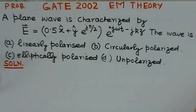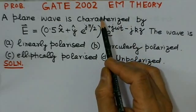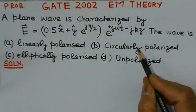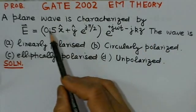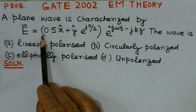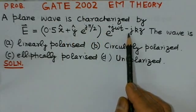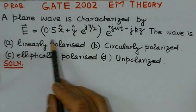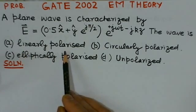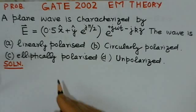This video considers another simple problem on Electromagnetic Theory. This problem is based on the polarization of a wave. The problem states: a plane wave is characterized by E equals 0.5x̂ plus ŷ times e to the power j(π/2) times e to the power j(ωt − kz). This is the electric field given, and we have to find whether the wave is polarized linearly, circularly, elliptically, or unpolarized.